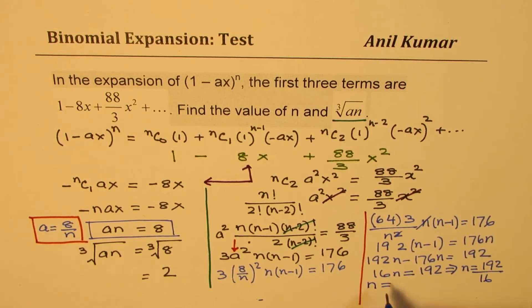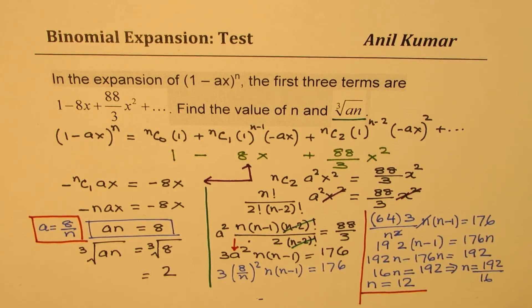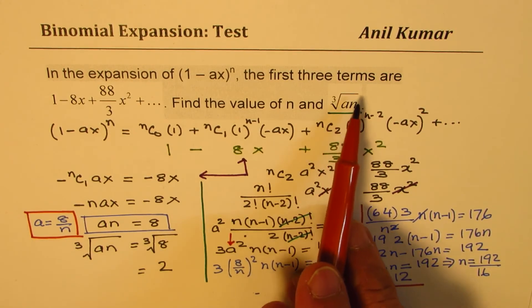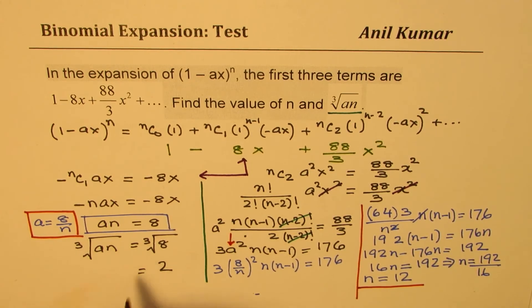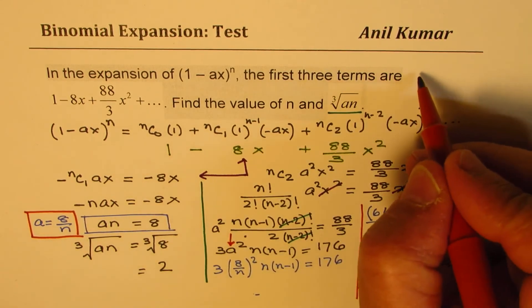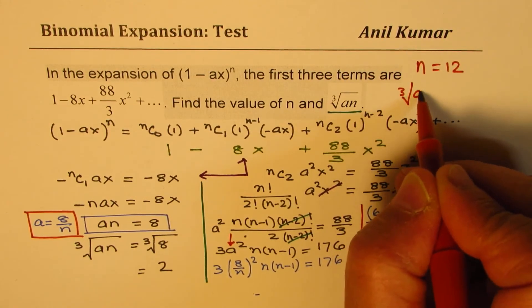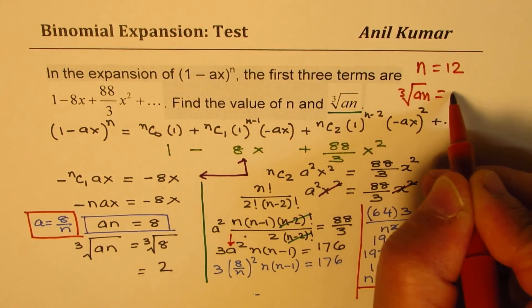So that is how you can find the value of n. N is 12 for us, and the cube root of An is 2 for us. So we get our answer: n = 12 and cube root of An = 2.